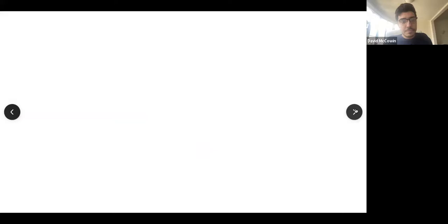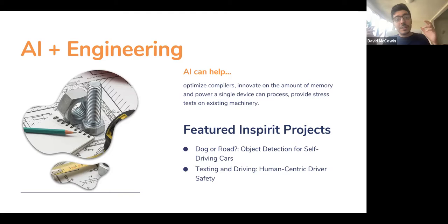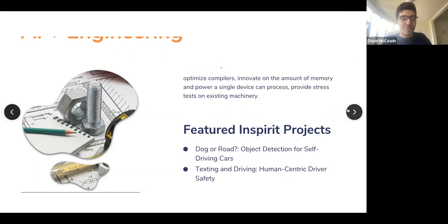AI and engineering — making sure new technology is well-optimized, safe, and rigorously tested. The biggest example right now is self-driving cars, which are a marvel of engineering, software development, and electrical engineering. AI and biology — tracking diseases, discovering how different molecules interact with each other, trying to make sure we have a really good understanding of biology of humans and other animals.